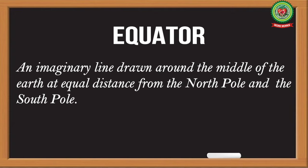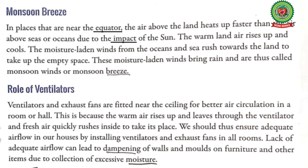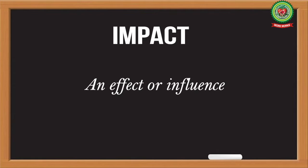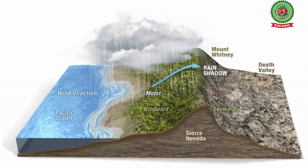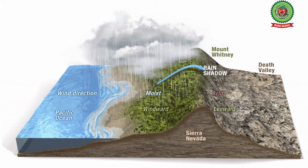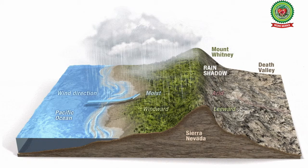At equal distance from the north pole and the south pole. Now underline the word 'impact' and write its meaning: an effect or influence. So, due to the influence of the sun, in places near the equator, the air above the land heats up faster than the air above the sea, and this warm air rises up and cools.